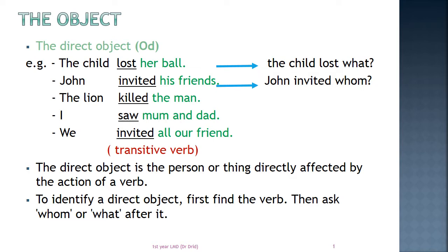His friends is directly affected by the action of inviting. The third example: The lion killed the man. The lion killed whom? The man. So, the man is the direct object — it is directly affected by the action of killing. I saw mom and dad. I saw whom? Mom and dad. So, mom and dad is a compound direct object.